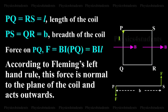Force on PQ: F equals BIL. According to Fleming's left-hand rule, this force is normal to the plane of the coil and acts outwards.